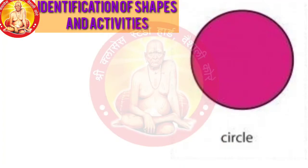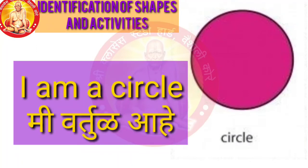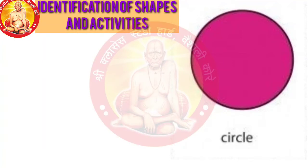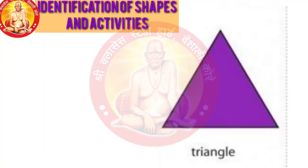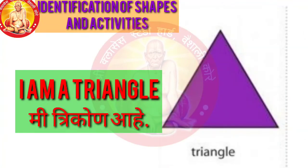I am Circle — Me Vartul Ahe. C-I-R-C-L-E, Circle means Vartul. I am Triangle — T-R-I-A-N-G-L-E, Triangle means Trikund. Me Trikund Ahe.